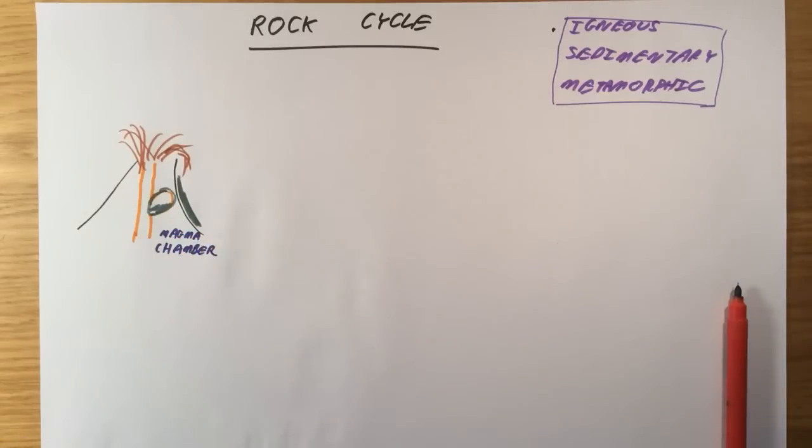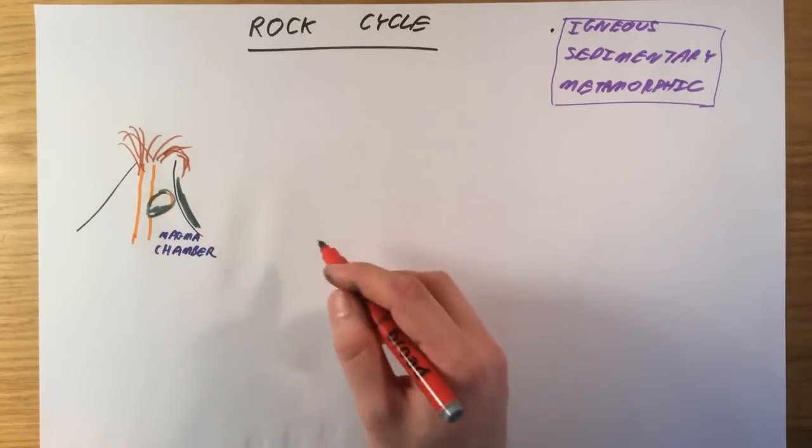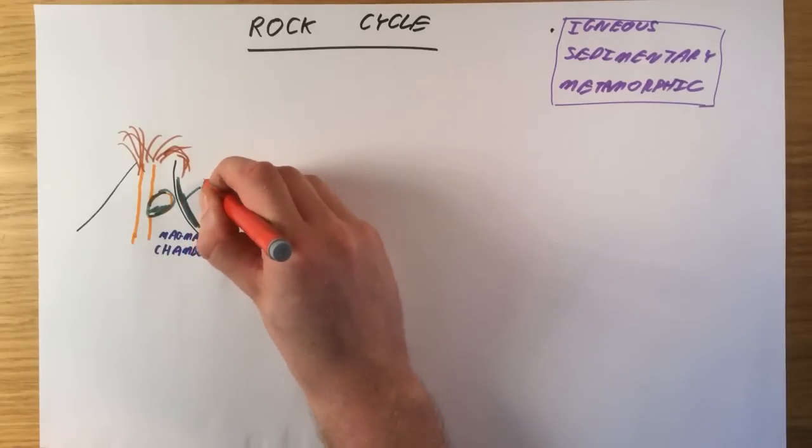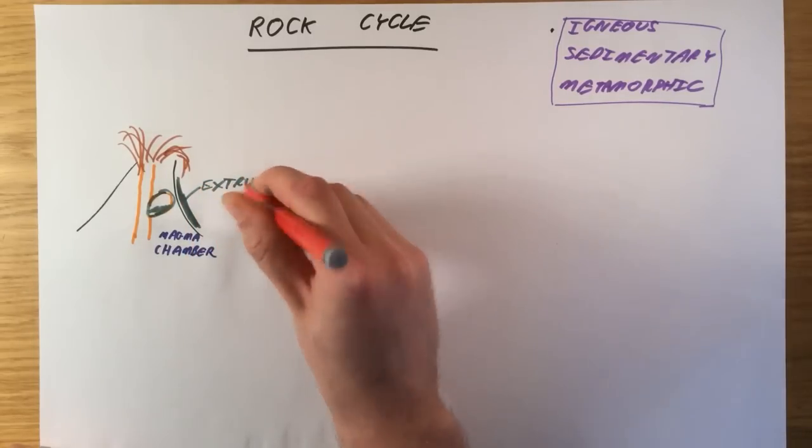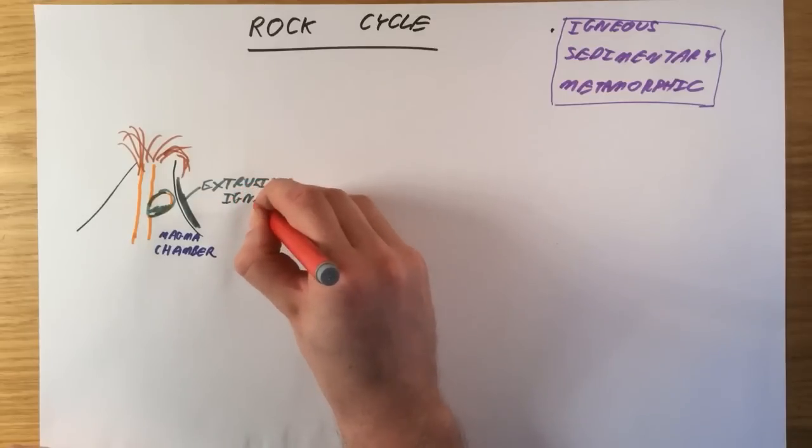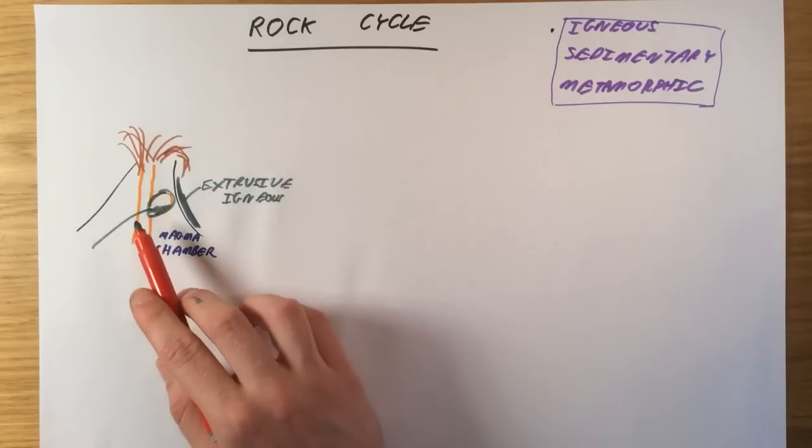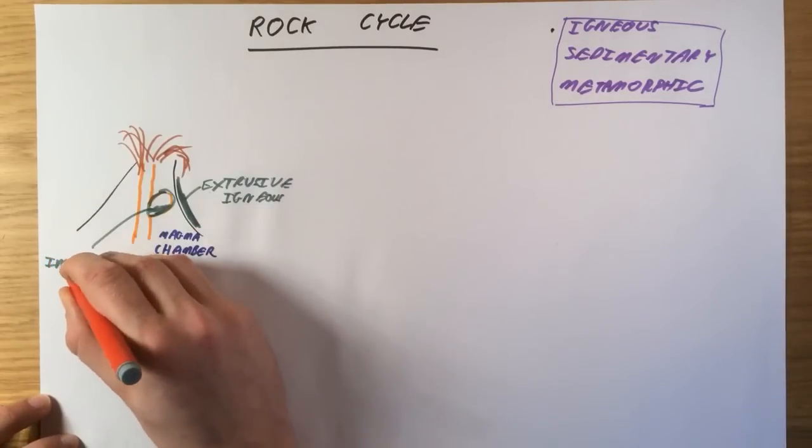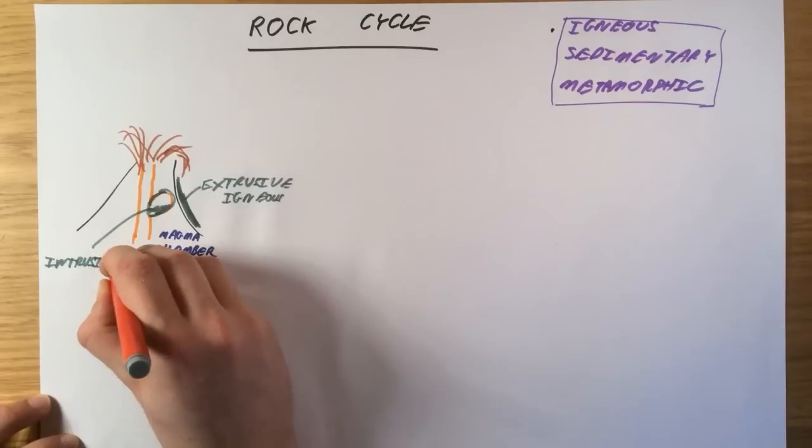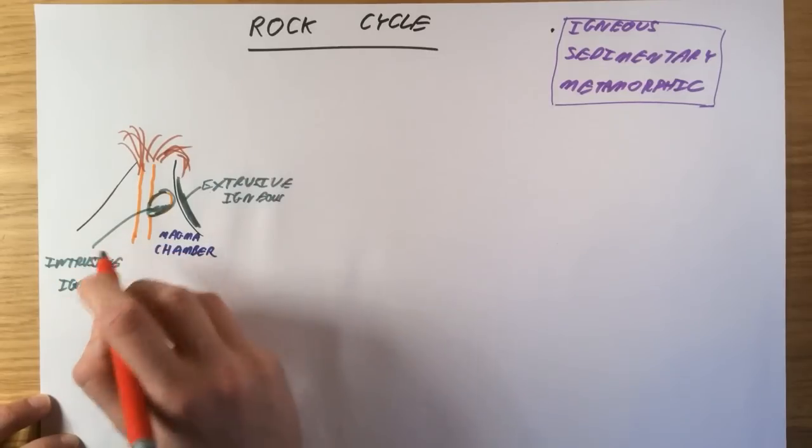And this leads us to having two types of igneous rock. The rock that's formed from lava that's escaped from the volcano, it's exited the volcano, we call extrusive igneous, because it's exited the volcano, and the magma that is cooled down and solidified inside the volcano, I call intrusive igneous, because it's solidified inside the volcano.